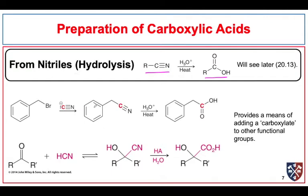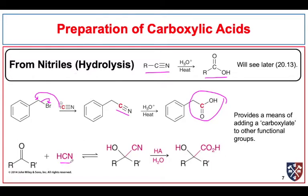Nitrile hydrolysis presents a way of converting other functional groups into carboxylic acids. We can displace a bromide with an SN2 reaction to extend a chain by one carbon atom, giving our nitrile, and then do the hydrolysis to get a carboxylic acid extended by one carbon unit. We can also form a carbon-carbon bond by hydrocyanation of a ketone or aldehyde, and then hydrolyze the nitrile group into a carboxylic acid, giving what's known as an alpha-hydroxy carboxylic acid.